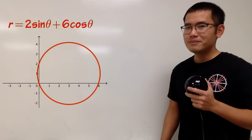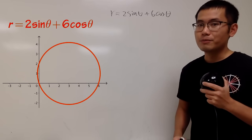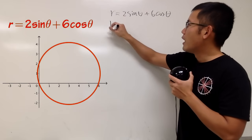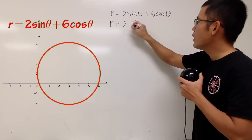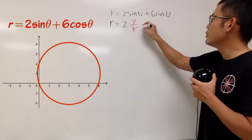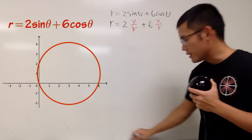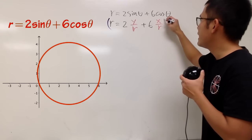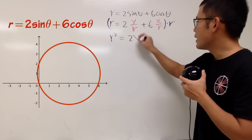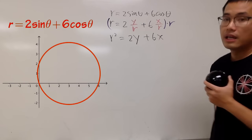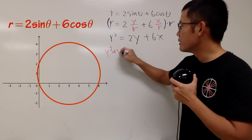In fact, the red one is a circle. This right here is the polar equation, and I will convince you that this is indeed a circle. First thing: R is R, 2 is 2, but for sine theta, we can write it as Y over R, and for cosine, it's X over R. Now we can multiply everybody by R — R times R is R squared, and that's equal to 2Y plus 6X. We have R squared, which is the same as X squared plus Y squared.